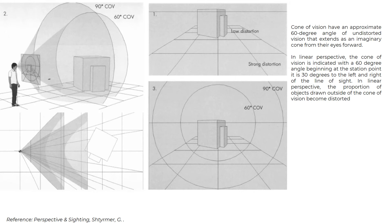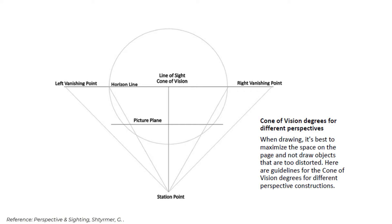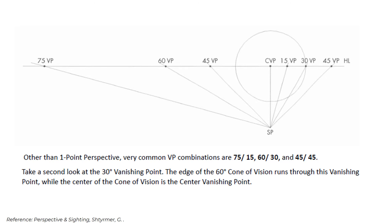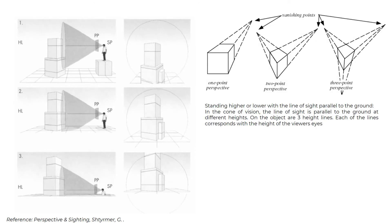Cone of vision: humans have an approximate 60-degree angle of undistorted vision that extends as an imaginary cone from their eyes forward. In linear perspective, the cone of vision is indicated with a 60-degree angle beginning at the station point — 30 degrees to the left and right of the line of sight. Objects drawn outside the cone of vision become distorted. When drawing, it's best to maximize the space on the page and not draw objects that are too distorted. Common vanishing point combinations are 75-15, 60-30, and 45-45. This slide presents different locations of the station point, standing higher or low, with the line of sight parallel to the ground. On the object are three height lines, each corresponding with the height of the viewer's eye.